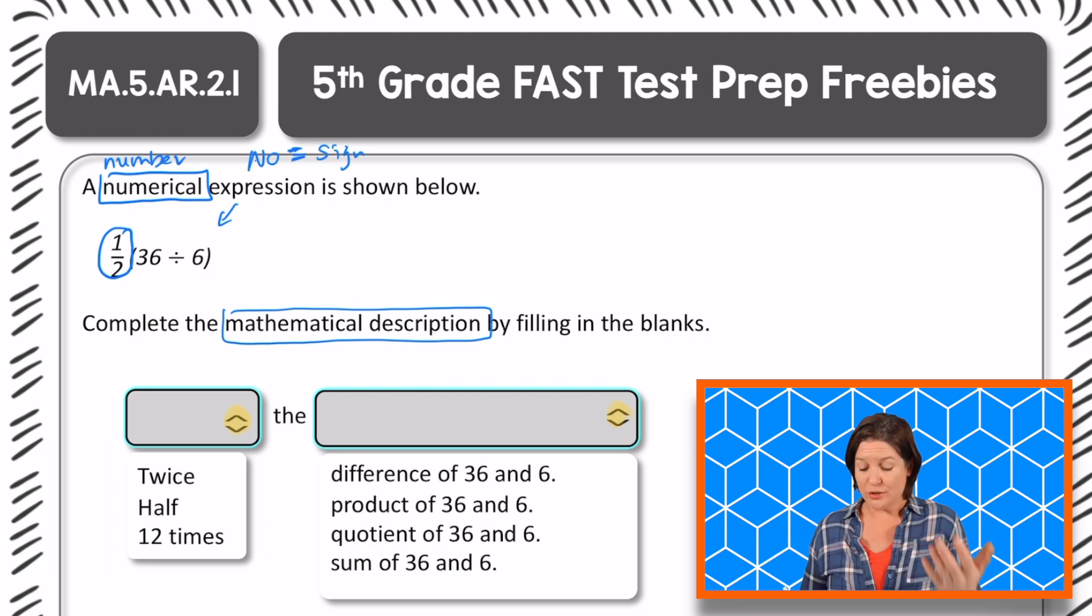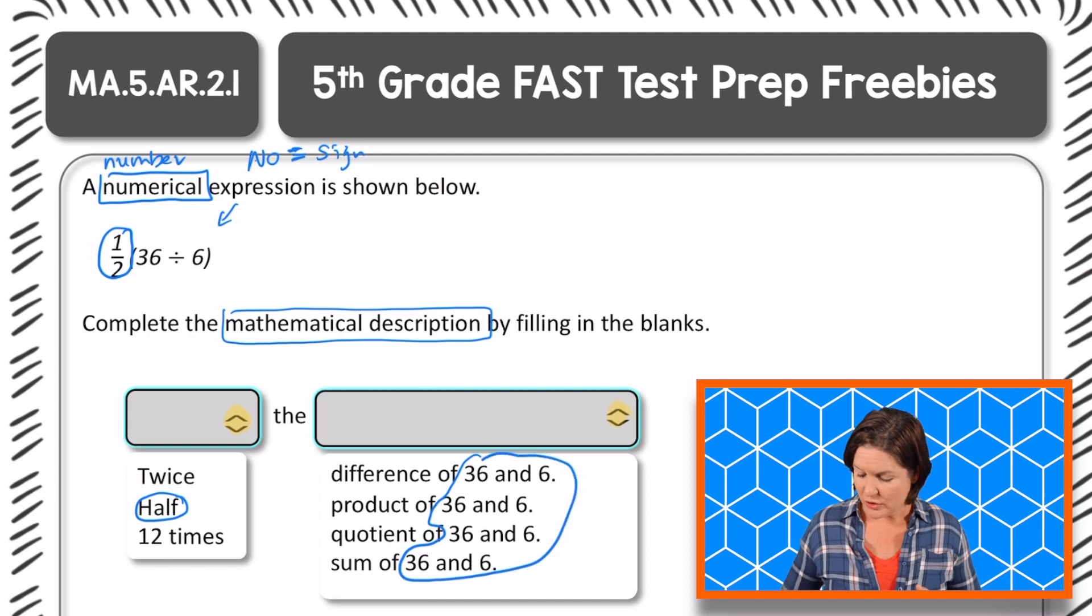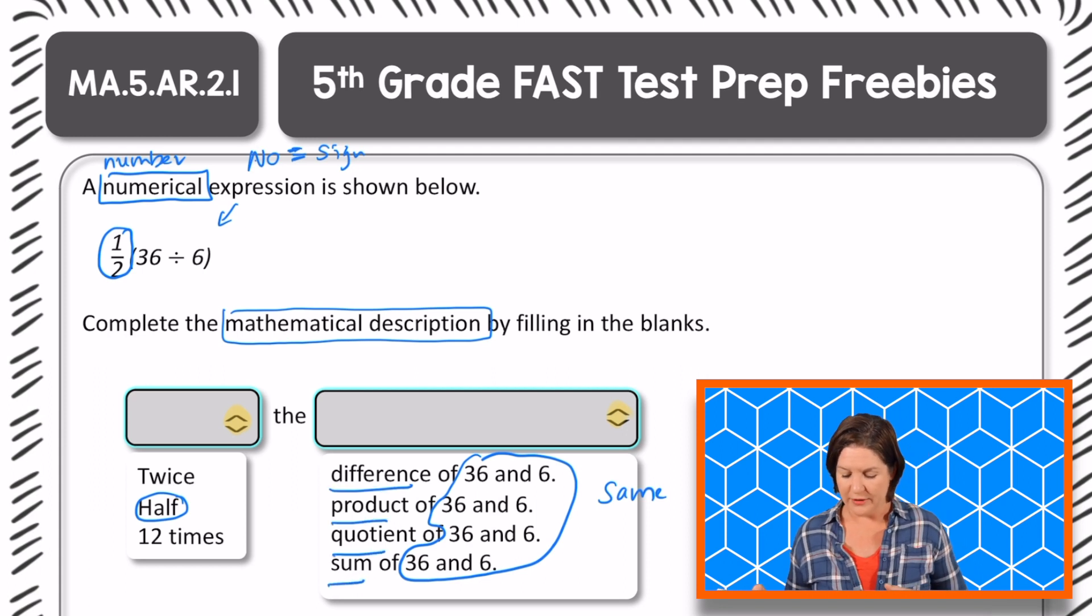So this would be not twice the blank and not 12 times the blank, but half the blank. Half the, and I see 36 and six is all the same right here. So it's just about changing these vocabulary words right there. So half the difference of 36 and six,